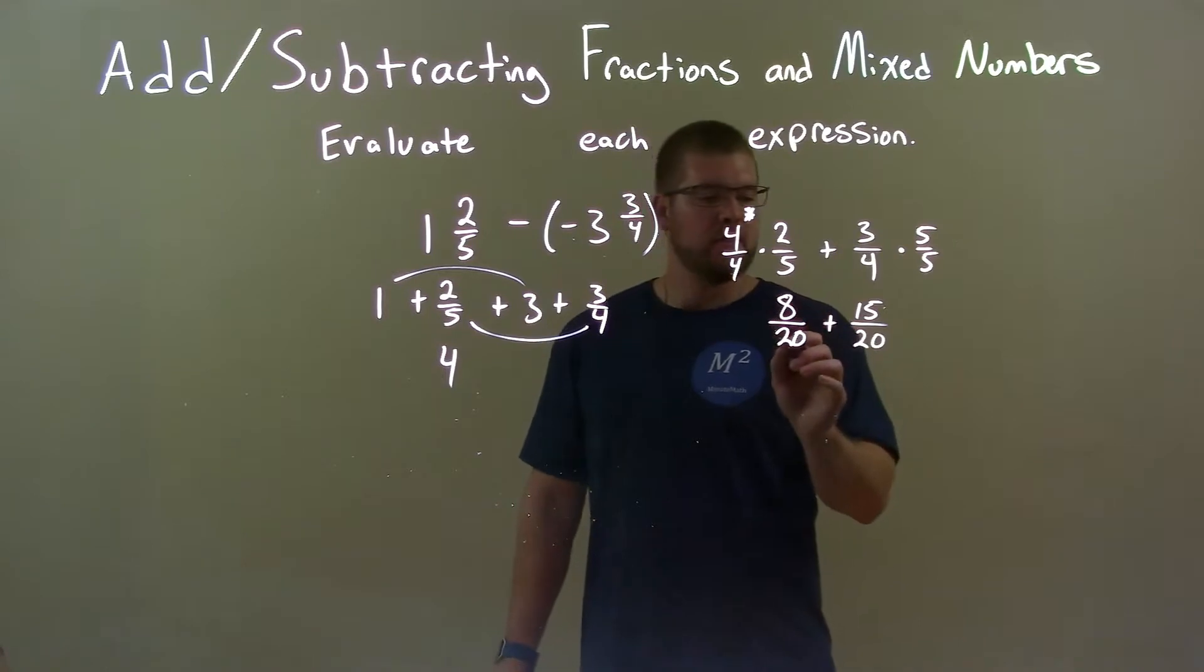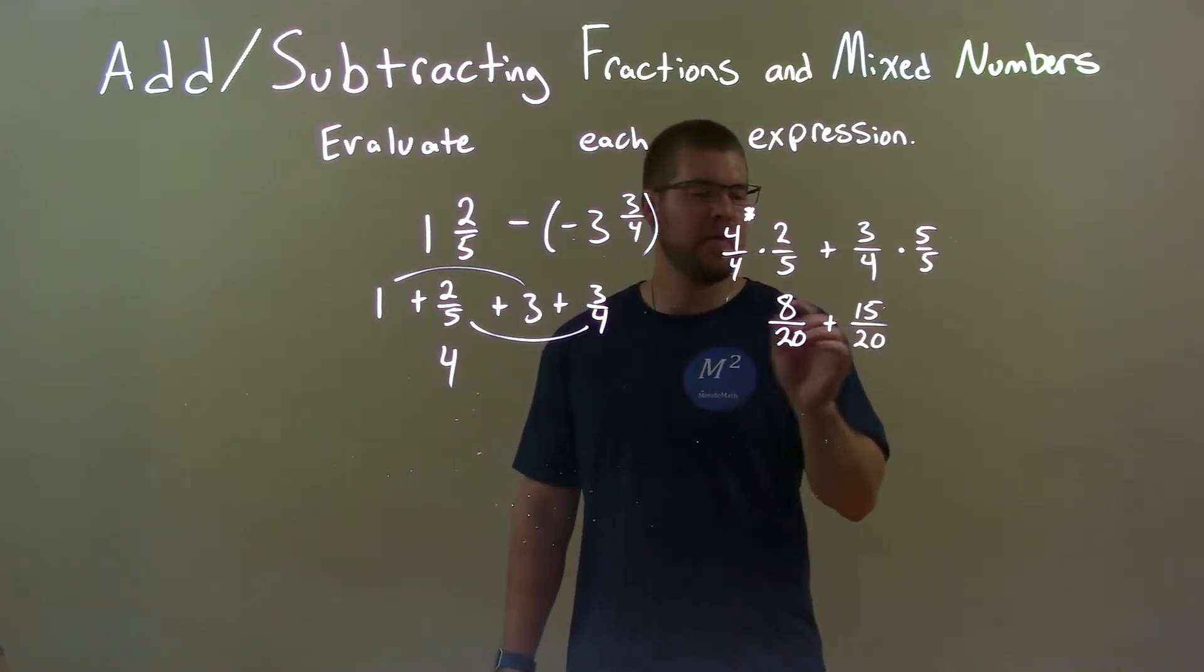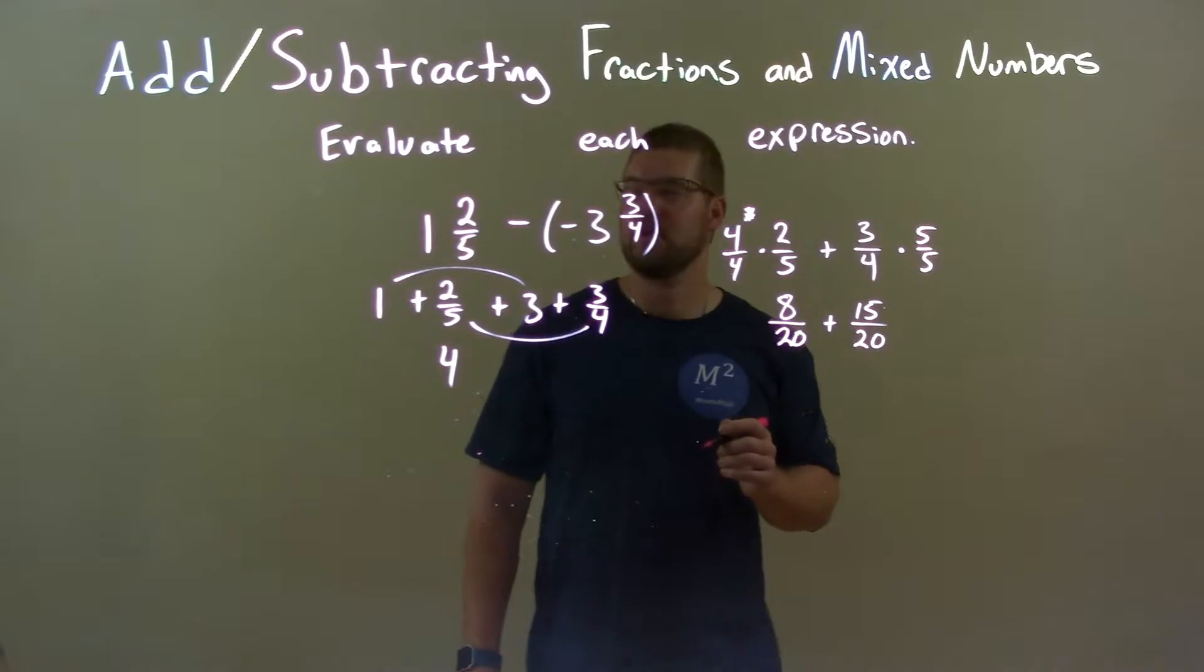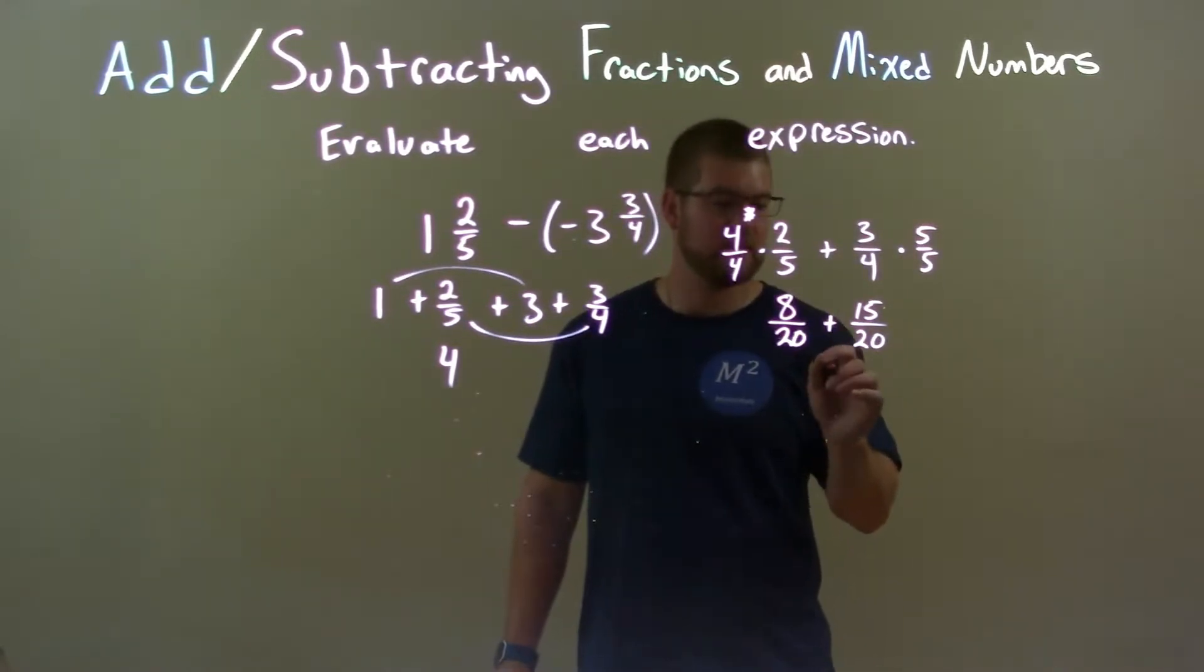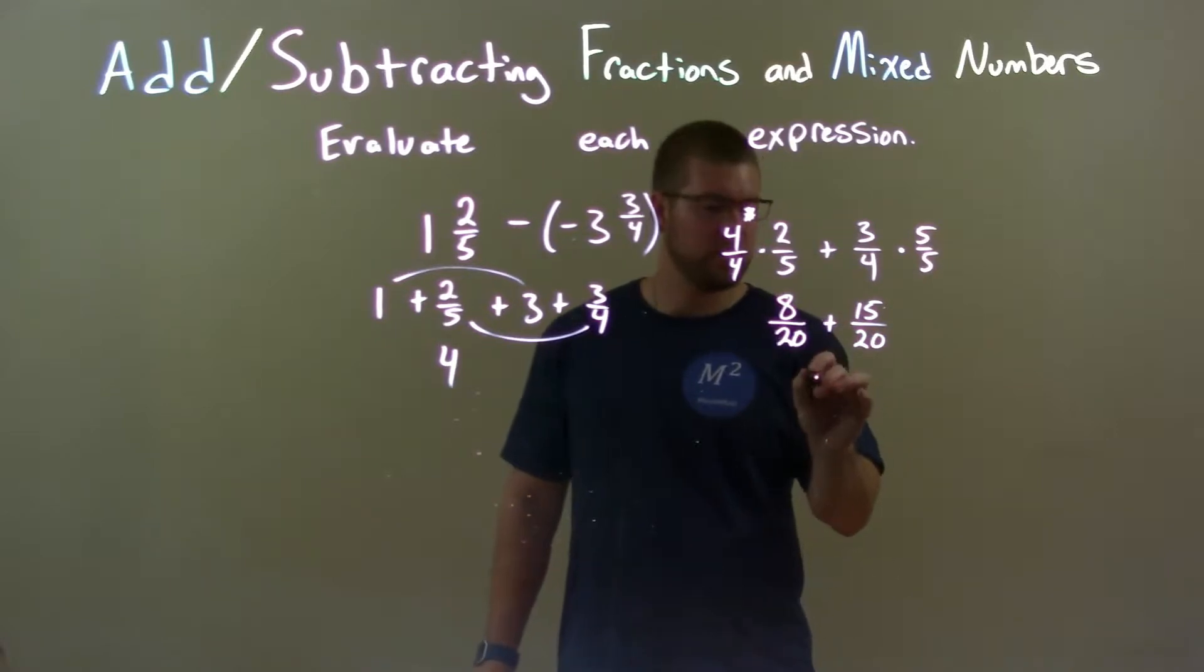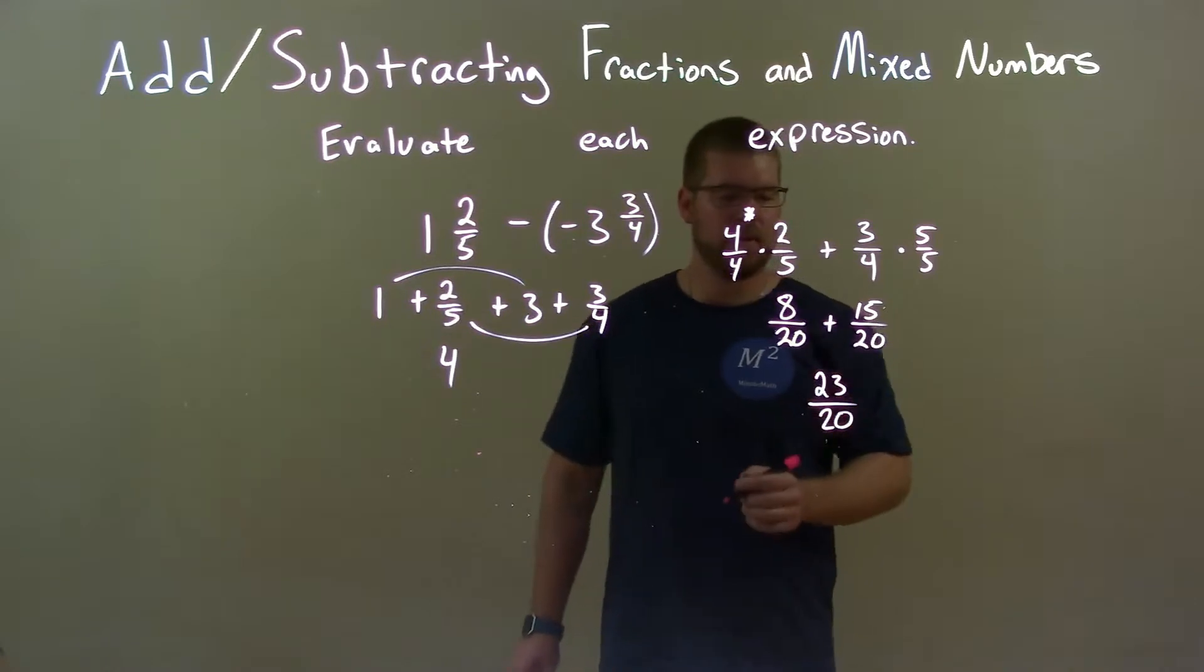Now, since we have the same denominator, we add the numerator. 8 plus 15 comes out to be 23. So, there's 23 here over 20. Keep the denominator the same.